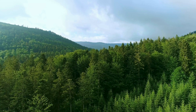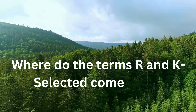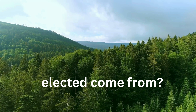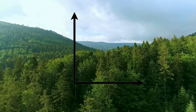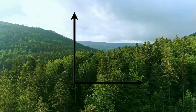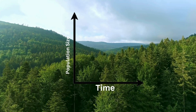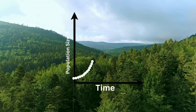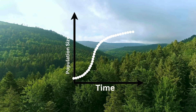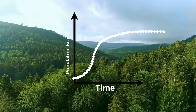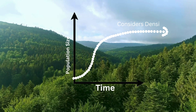Let's first understand what the terms R-selected and K-selected mean and how they originate. Let's craft a traditional population dynamics graph, with population size on the y-axis and passage of time on the x-axis. When populations grow, you will get a plateau, representing a change in population size that relies on time and considers density. On this graph,